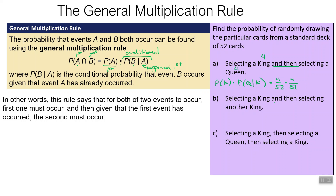What's the probability of selecting a king and then selecting another king? We want the probability of king times the probability of king given that a king has already been selected. It would be four out of 52 for the first king. Now we want to get a king and we've already taken one out, so there are three kings left and 51 cards remaining. So this probability is going to be smaller than the previous one.